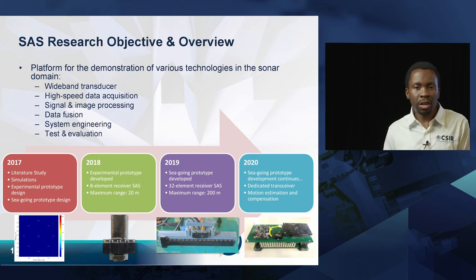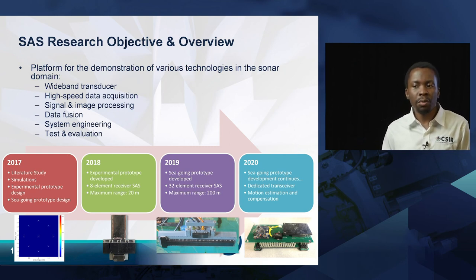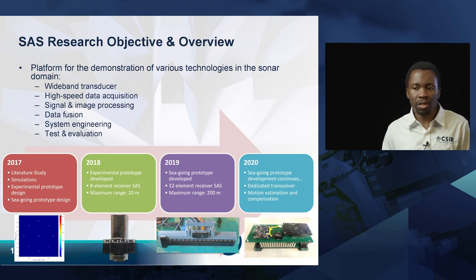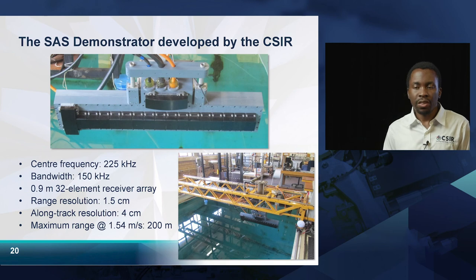This project has been an ongoing three-year project. We started in 2017 with a focus on laying the foundations through literature study and simulations, then went on to developing a couple of prototypes as proof of concept. We are now at the stage of developing a full 32-element synthetic aperture sonar array rated to achieve a maximum range of 200 meters, along with a dedicated transceiver and motion estimation and compensation algorithms. The system operates at a center frequency of 225 kilohertz with a bandwidth of about 150 kilohertz, a 900 millimeter 32-element receiver array, a range resolution of about 1.5 centimeters, and an along-track resolution of about 4 centimeters.